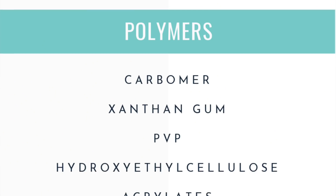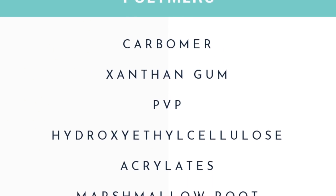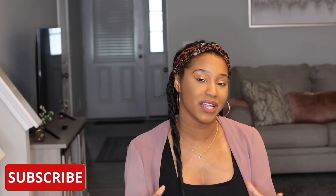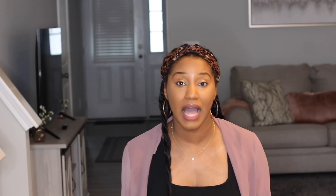Number one, look for polymers within the first five or six ingredients, or at least in the middle part of the ingredient list. When I say polymers, I'm referring to things like xanthan gum, slippery elm, PVP, and carbomer. All of these create jelly-like textures within the formula that make it super easy for the comb to glide past your hair.